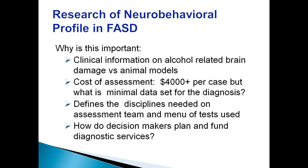Why is this important? We know quite a bit about brain damage from prenatal exposure to alcohol from animal models, but we really need to do the clinical research to see how this impacts an individual prenatally exposed to alcohol across their lifespan. It's much more complex in the human experience because we can't control all the variables — multiple complexities, including the impact of both pre- and postnatal trauma on an already damaged brain. There is a compounding effect. The cost of assessment is quite considerable — at least $4,000 or more per case. What we don't know now is what is the minimal data set for the assessment process, what disciplines we need on an assessment team, and what menu of tests should be used. We're looking to researchers to help define that minimal battery.